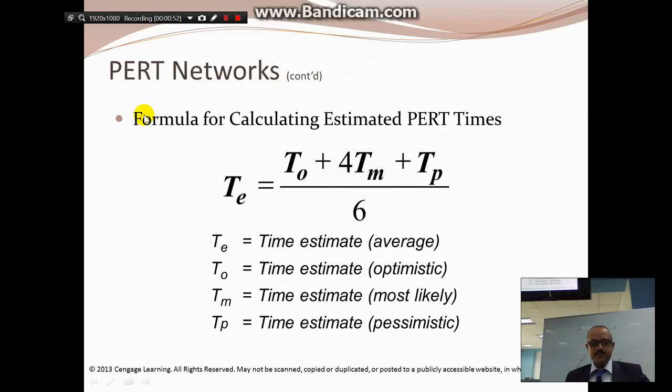Let's look at an example here. This is the equation for PERT times. These are terminologies to understand before you look at the example: Te, To, Tm, and Tp. Te is time estimate, To is optimistic, Tm is most likely, and Tp is pessimistic. The equation is that the time on average will be the optimistic plus four times your most likely plus the pessimistic, divided by six - your total estimated or average.